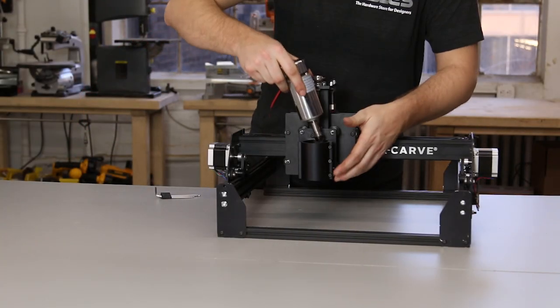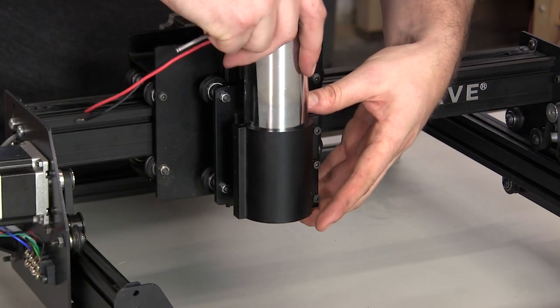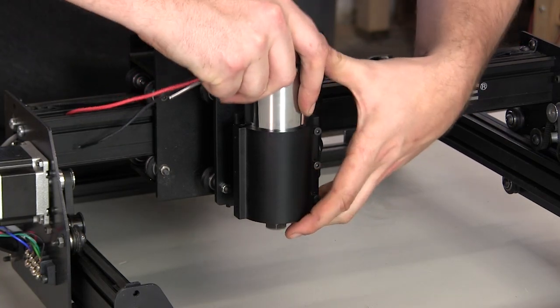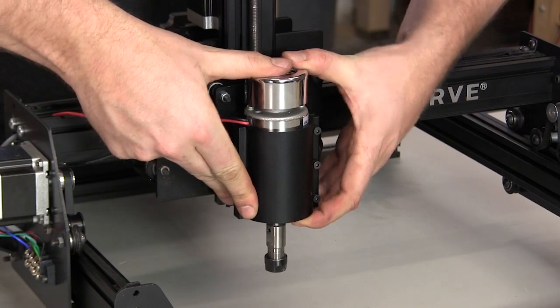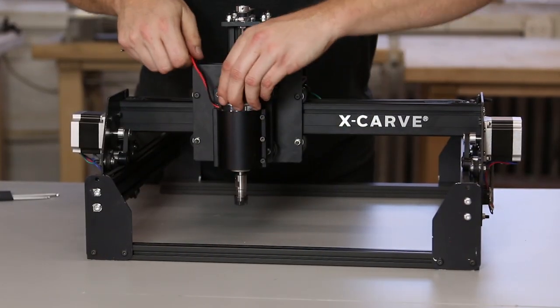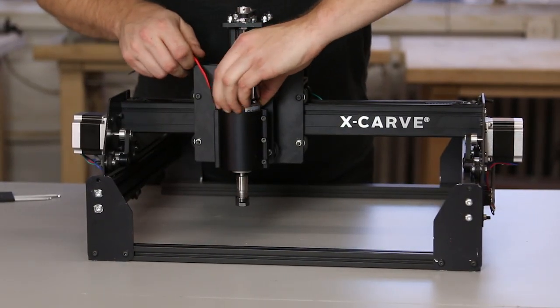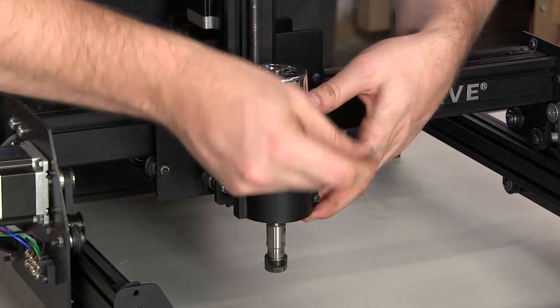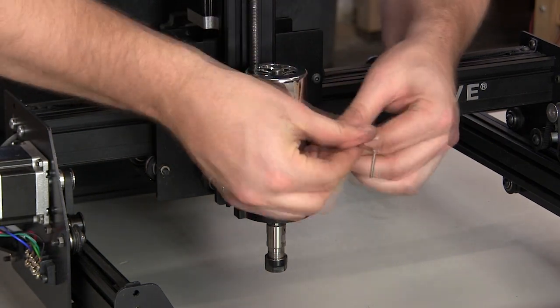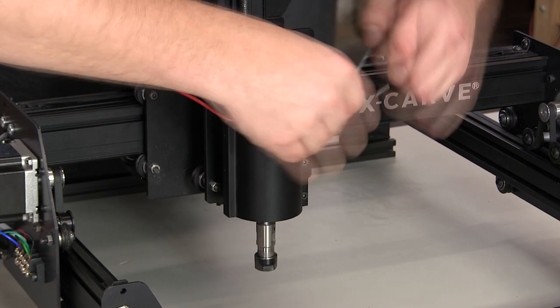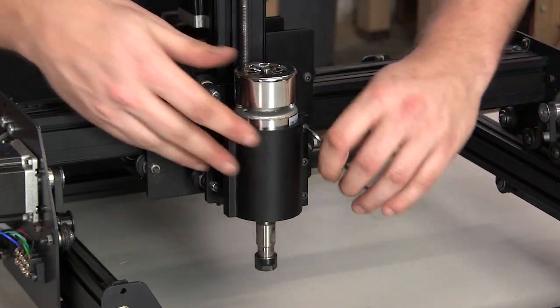Slide the 48-volt spindle into the clamp. The black and red wires should just clear the top of the clamp. Tighten the screws for the clamp a little bit at a time, alternating until all three are as tight as you can make them.